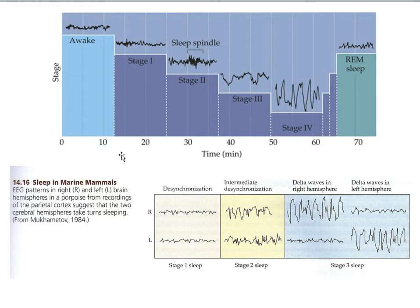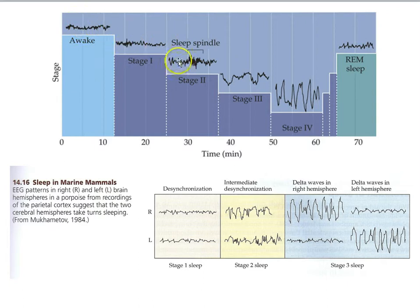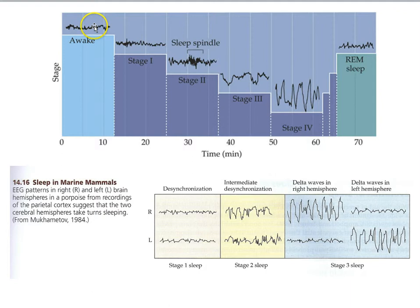Another piece of evidence that sleep must be doing something positive for the animal has to do with the nature of how marine mammals sleep. To understand this, we first need to look at some basic EEG data for the different stages of sleep in the typical mammal. Here is the awake mammal — if you record the electrical activity of the surface of the brain, the cortex, you'll see low amplitude, high frequency signals characteristic of being awake.